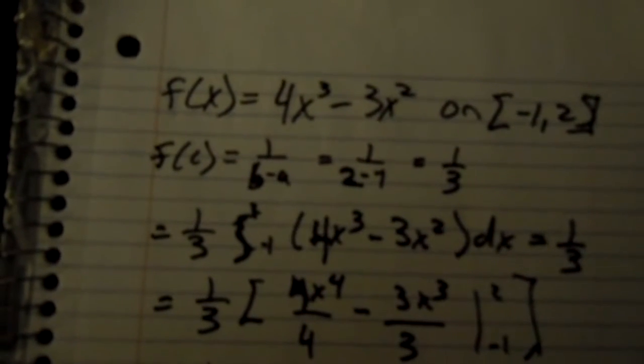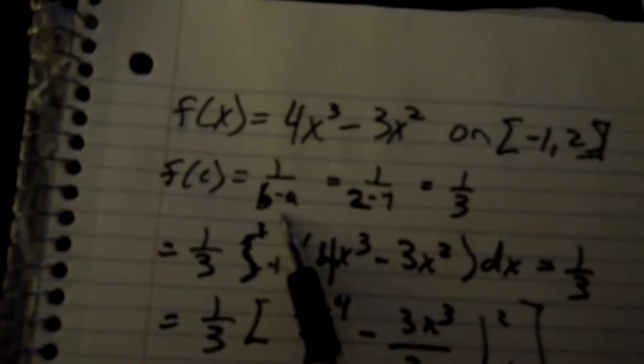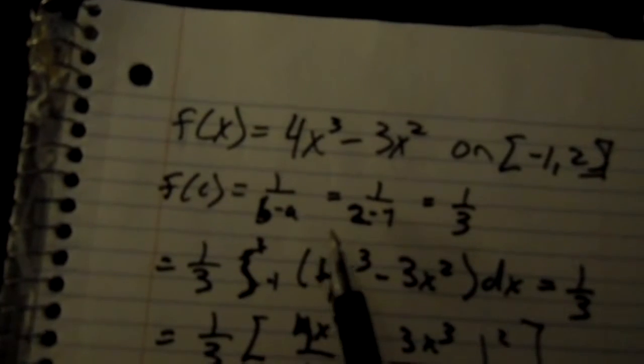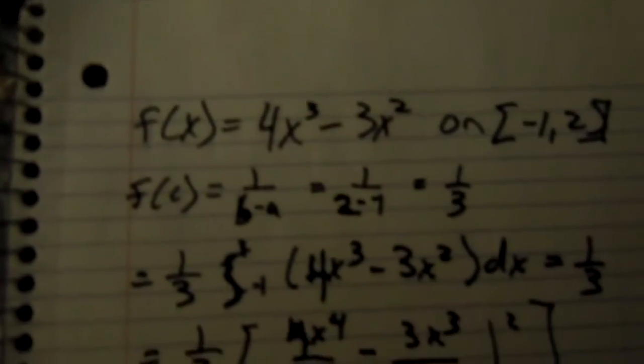First you have to find the average output of f which is going to be f of c equals 1 over b minus a, which equals 1 over 2 minus negative 1, which equals 1 third.